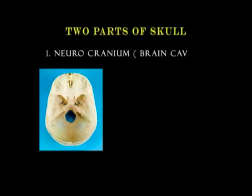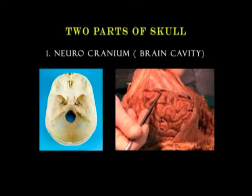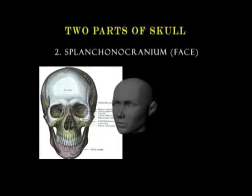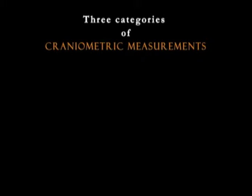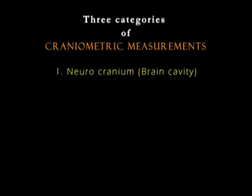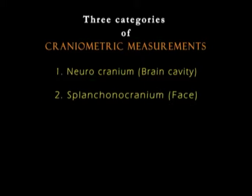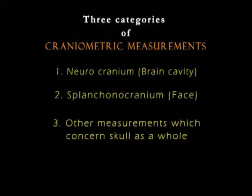One may conveniently divide the skull into two parts: first, the neurocranium, that is the brain cavity, and second, the splanchnocranium, that is the face. Craniometric measurements are divided into three categories: neurocranium (brain cavity), splanchnocranium (face), and other measurements which concern the skull as a whole.